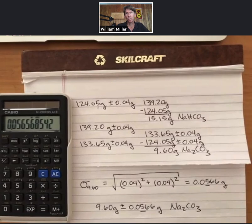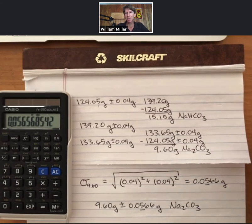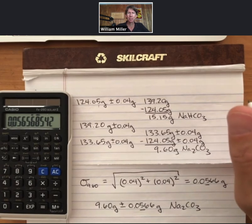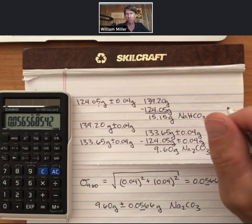And that is one example of how to propagate errors. Propagating errors when you do multiplication and division is different. There is an example in the introduction to the lab. Please ask your instructor if you have any questions about it, but also please mirror your work after the type of work that's done in the introduction to the lab.